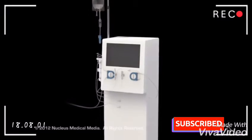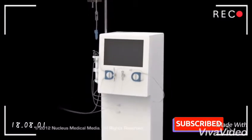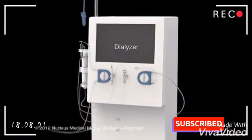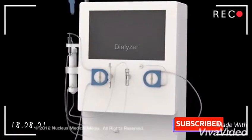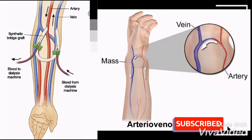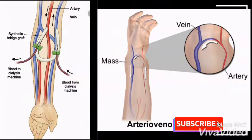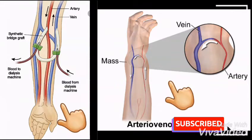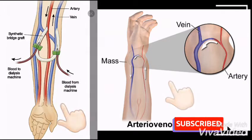In hemodialysis, the doctor will use a machine called a dialyzer to clean the blood outside the body. Some weeks or months before one begins hemodialysis, the doctor will prepare a vascular access site on the patient's body, creating either an arteriovenous graft or arteriovenous fistula to access the bloodstream.